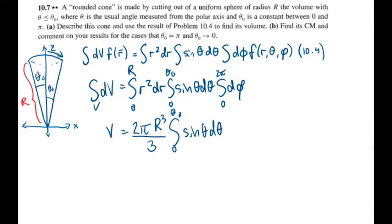The integral of sine is negative cosine, so 2pi R cubed over 3 times negative cosine of theta from 0 to theta naught.